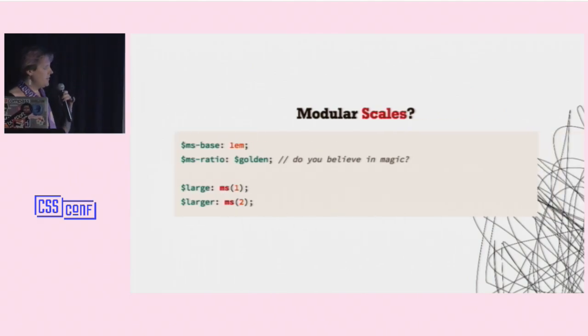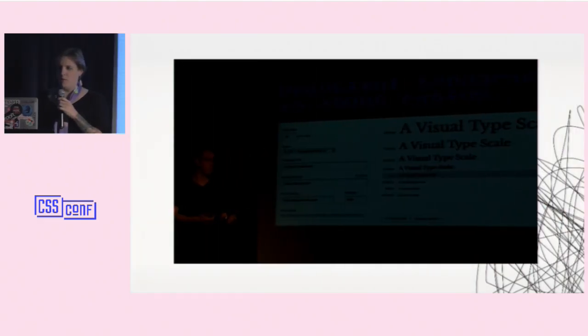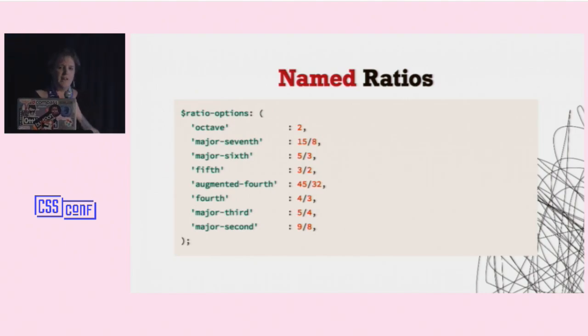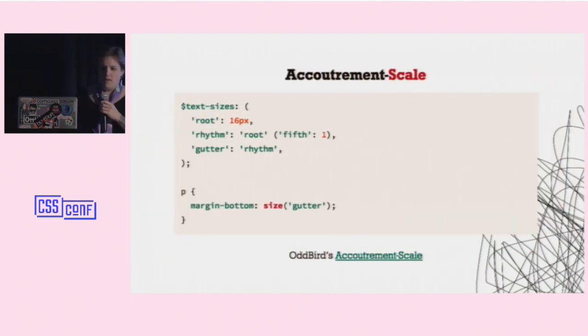Other people like to use modular scales. I've played with them some. If you believe in magic, you can use the golden ratio and then make adjustments up and down the scale. We've heard about this. But here's a map of named ratios. We've got an octave and a major seventh. People like using these musical ratios. And then a map of sizes. And again, we've got self-reference and adjustments. So I want to take the root and take it a fifth up. And so I have a size function that does that. So I can grab gutter. Gutter knows to look at rhythm. Rhythm takes the root and bumps it up a fifth.